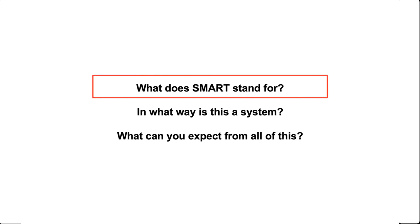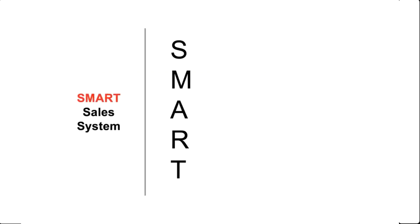So what does SMART stand for? The S and M stand for Sales Messaging. When I say sales messaging, I refer to what you say and communicate when talking with prospects — whether over the phone, in email, voicemail, meetings, or presentations. A lot of that covers what you say about your product, what you say to build interest, or how you qualify the prospect.